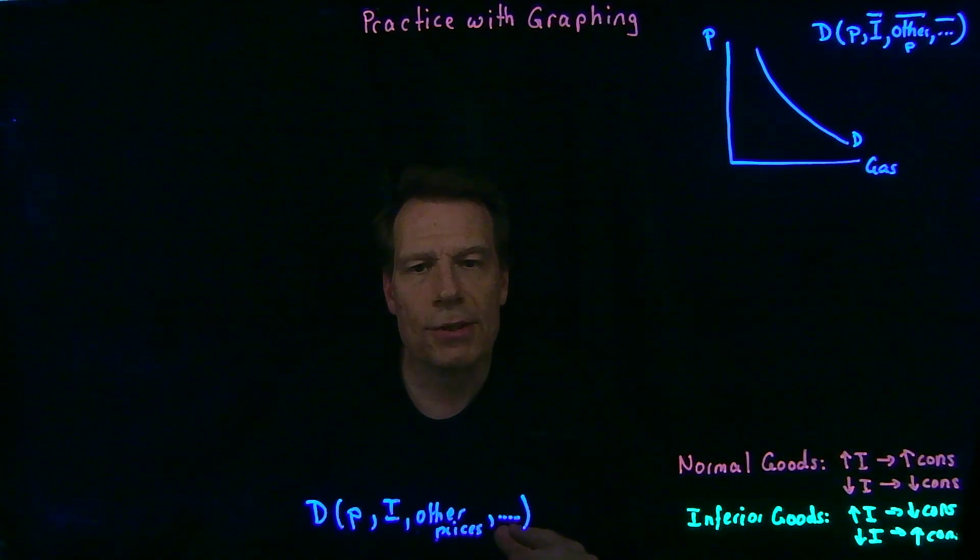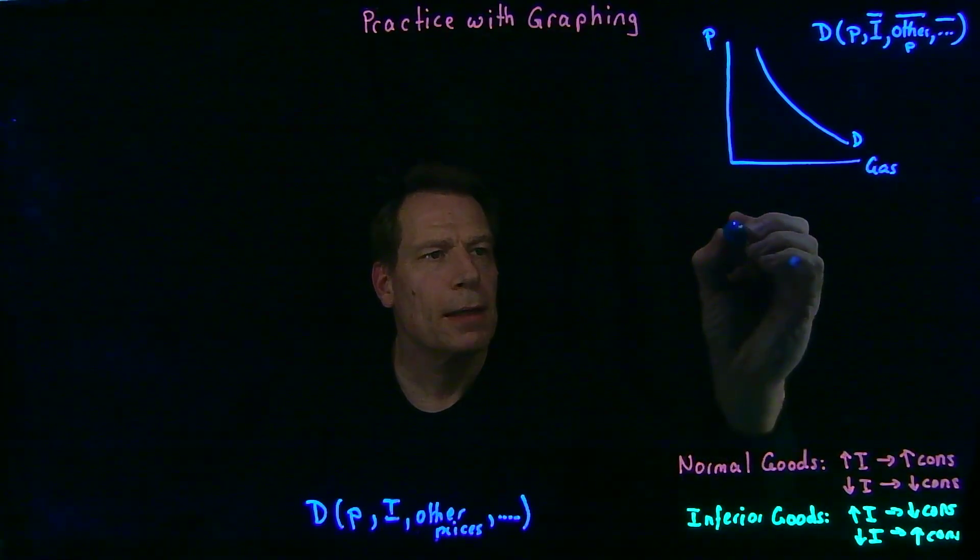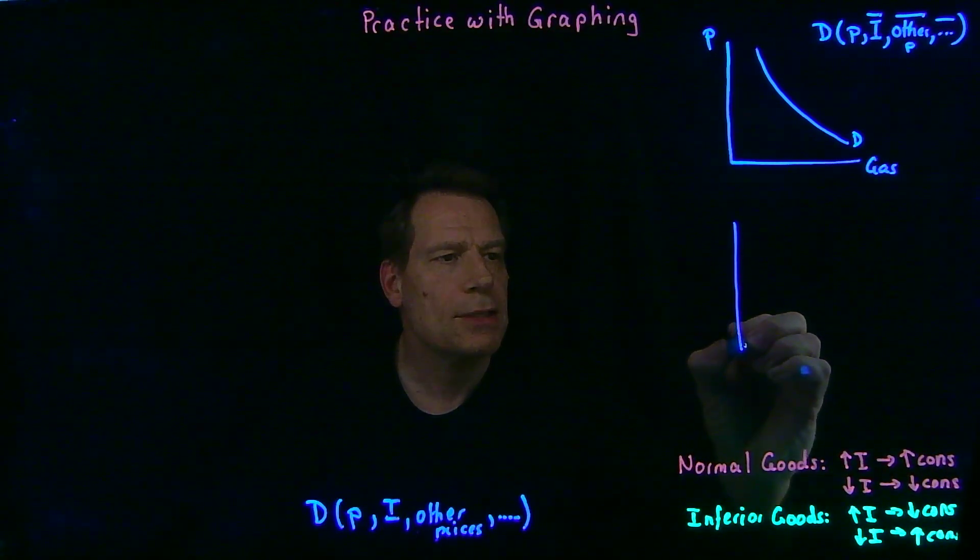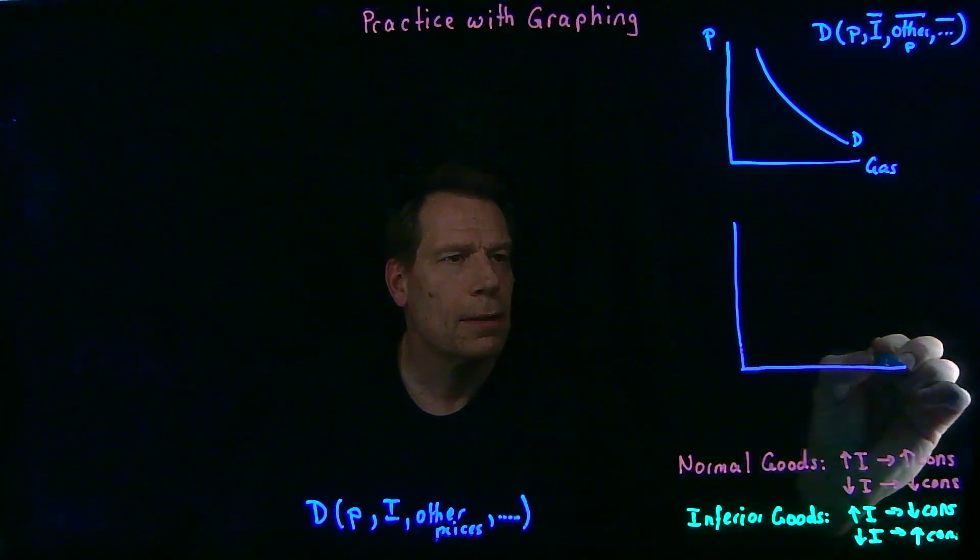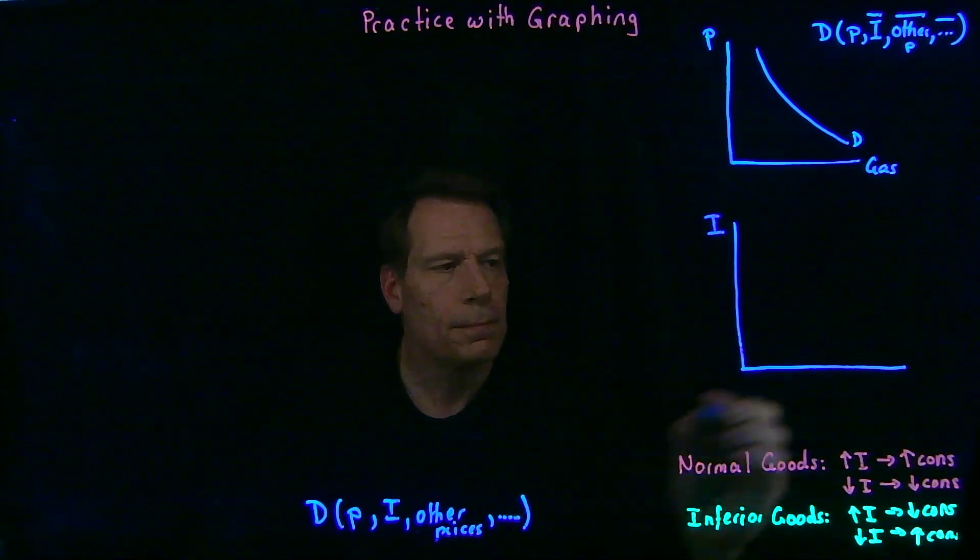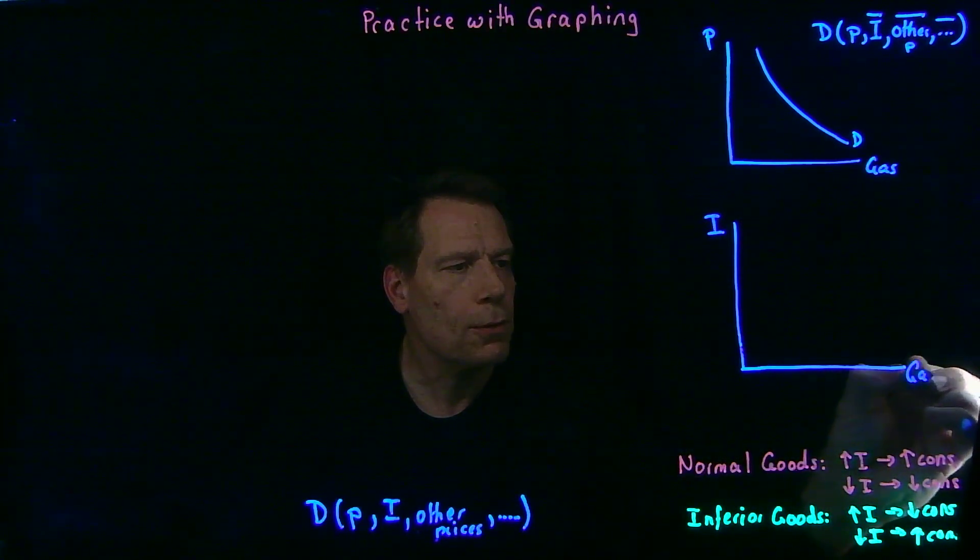Now suppose I asked you to graph a different kind of curve. Now, instead of putting price on the vertical axis, we'll put income on the vertical axis, and we'll keep gasoline on the horizontal axis.